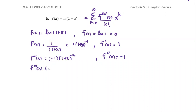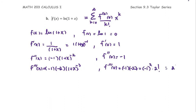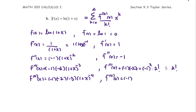The third derivative is negative one times negative two multiplied by one plus x to the power negative three, so f triple prime at zero is negative one multiplied by negative two, which we can rewrite as negative one to the second power multiplied by two factorial, which equals two factorial. The fourth derivative is negative one times negative two times negative three times one plus x to the power negative four. The fourth derivative at zero is negative one to the third power multiplied by three factorial, or negative three factorial.